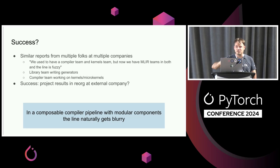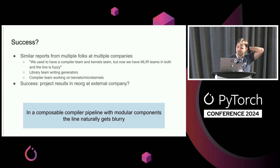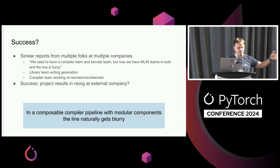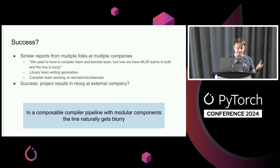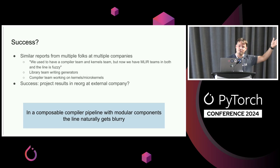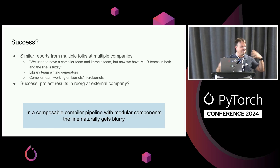Since then, MLIR was released, adopted at many different companies, and I've had the same conversation with multiple folks at different companies. They'd come to me and say MLIR has been useful, but a little bit problematic — because we used to have a compiler team and a library team, and now both are working on MLIR. It's getting fuzzy who's supposed to be doing what, because we have a library team writing kernel generators using MLIR, the Python bindings, the high-level optimizations, but we also have the compiler team incorporating kernels and microkernels. Tongue-in-cheek: is it a success if the project causes reorgs in other organizations? Maybe. But I think in a composable compiler pipeline with modular components, this line just naturally gets blurry.